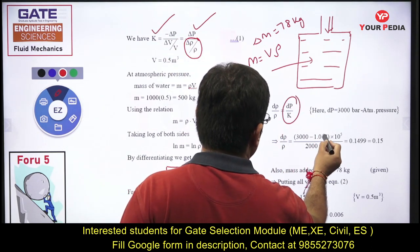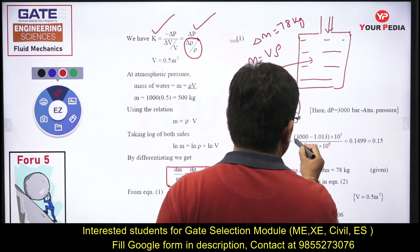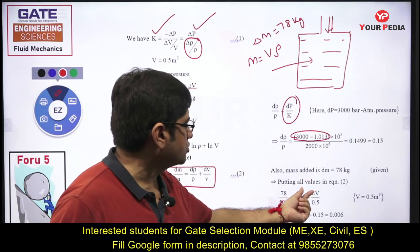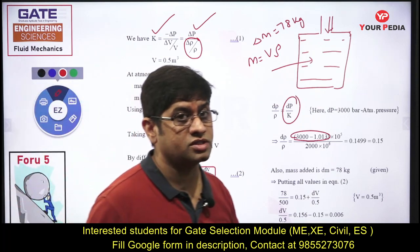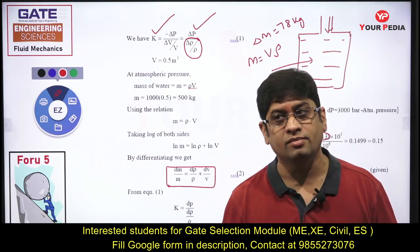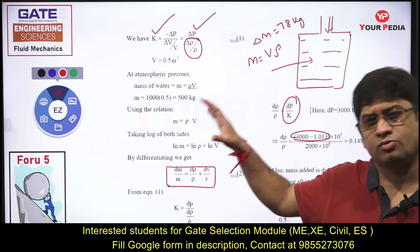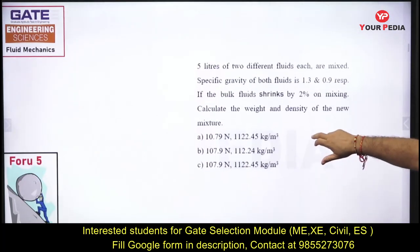The excess pressure ΔP = 3000 − 1 bar (1 bar atmospheric was already present), converted to Pascal. Dividing by K gives Δρ/ρ. With Δm/m = 78/500 known and Δρ/ρ calculated, we find ΔV/V and therefore ΔV—the answer to the question. Note: this year IIT Kharagpur is conducting the exam, and questions are drawn from NPTEL videos and IIT Kharagpur faculty books, so build concepts in that direction.